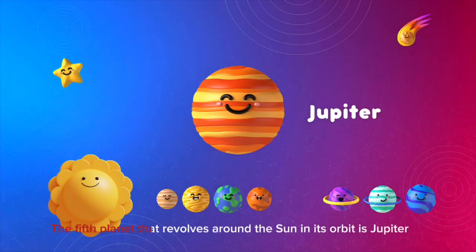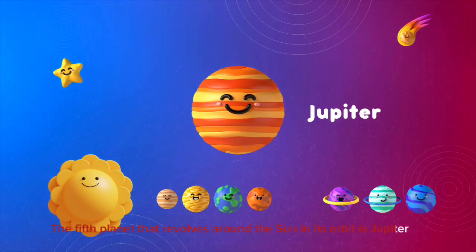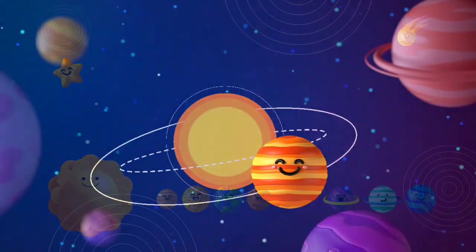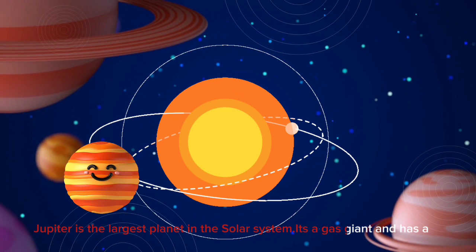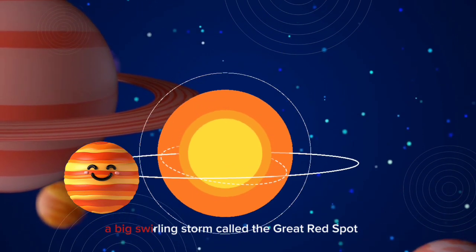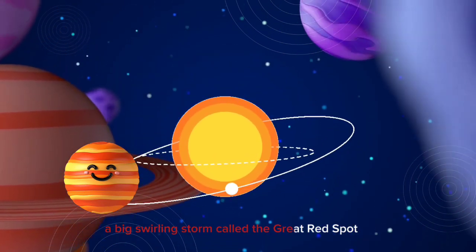The fifth planet that revolves around the sun in its orbit is Jupiter. Jupiter is the largest planet in the solar system. It's a gas giant and has a big swirling storm called the Great Red Spot.